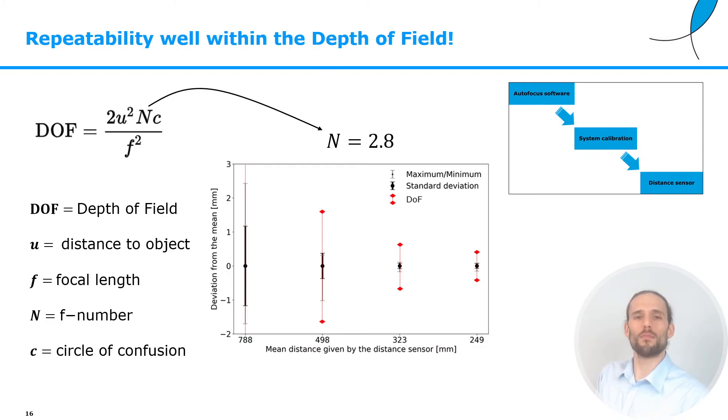Now one might wonder, but how accurate, how repeatable is such a system? It turns out that the system, this approach, is repeatable better than the depth of field. How did we examine this? We took four specific distances, and we ran 10 independent distance measurements at each of these distances. Then, we plot the mean distance given by the distance sensor on the x-axis, and on the y-axis, we plot the deviation from this mean.